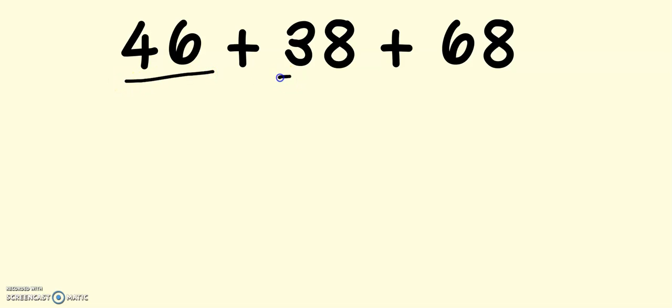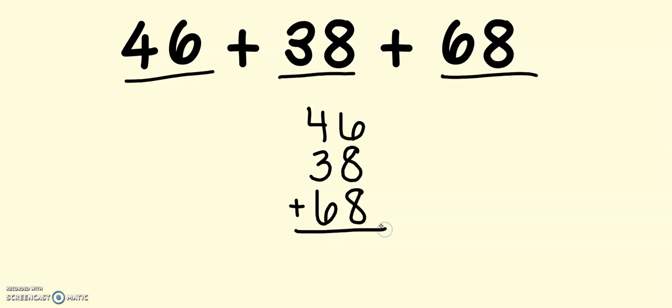I have 46, 38, and 68. So 3 numbers again. I'm going to write them vertically, up and down. I always want to make sure that I line my numbers up because that will help me to add. And I only need 1 plus sign at the bottom. Okay, just like last time, if you like to draw the line to separate your tens and your ones, you can do that. I'm going to start with the ones.